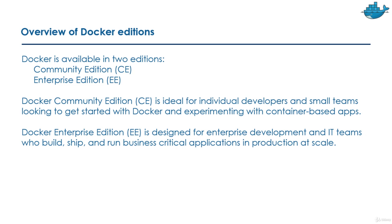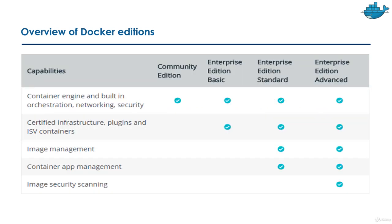Docker Enterprise Edition is designed for enterprise development teams who build, ship, and run business-critical applications in production at scale. Features supported include container engines, build, orchestrations, networking, and security, which are available in the Community Edition.